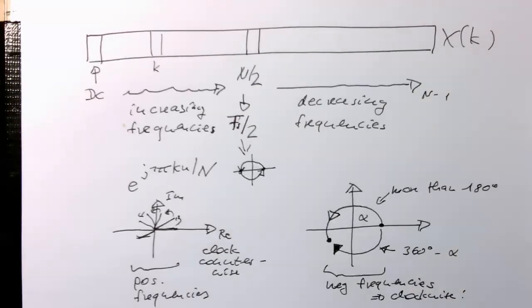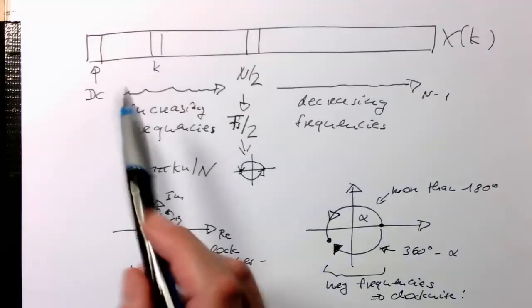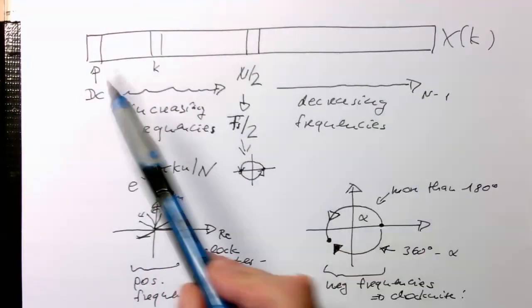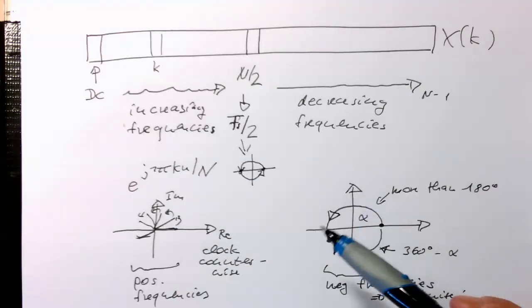So with that, we have established how our frequency vector is created and that we have different frequencies.